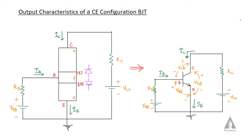Output characteristics is a graph which is plotted between the output current and output voltage, for different values of input current.